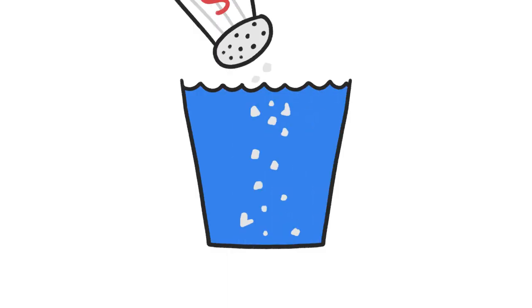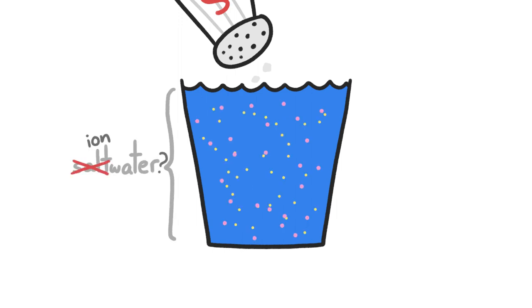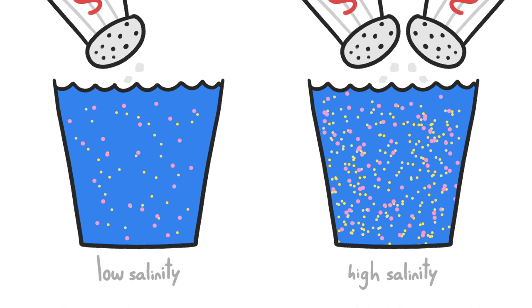That's what's happening when you dissolve a bit of table salt in a cup of water. Even though we'd call what's in the cup salt water, there's no salt in it, just ions. And the concentration of those ions is what we're really talking about when we measure the salinity of water.